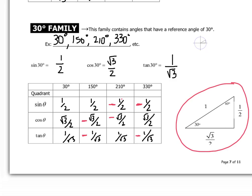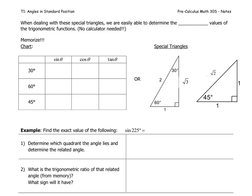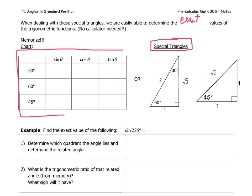When dealing with special triangles, we are easily able to determine the exact values of the trigonometric ratios. I'd like you to take a moment now to summarize the information from the other page by filling in this chart — what is the sine, the cosine, and the tangent for 30, 60, and 45?